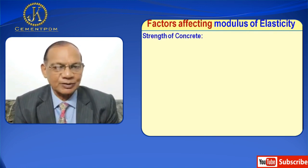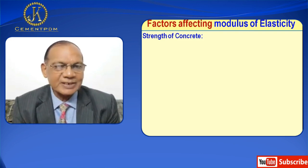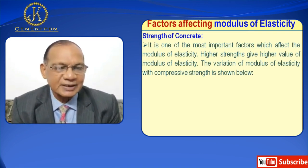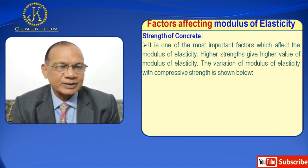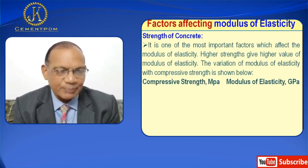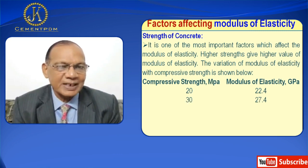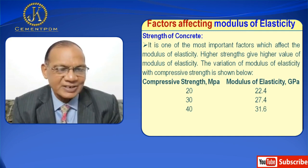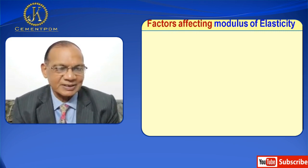Now I will discuss factors affecting modulus of elasticity. Factor one is strength of concrete — it is one of the most important factors. Higher strength gives a higher value of modulus of elasticity. When compressive strength is 20 MPa, modulus is 22.4 GPa; 30 MPa gives 27.4 GPa; 40 MPa gives 31.6 GPa; 50 MPa gives 35.4 GPa; and 60 MPa gives 38.7 GPa.